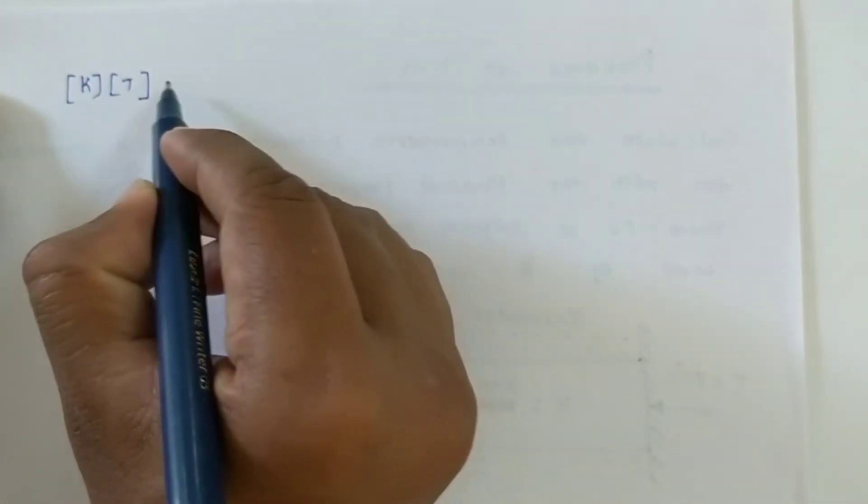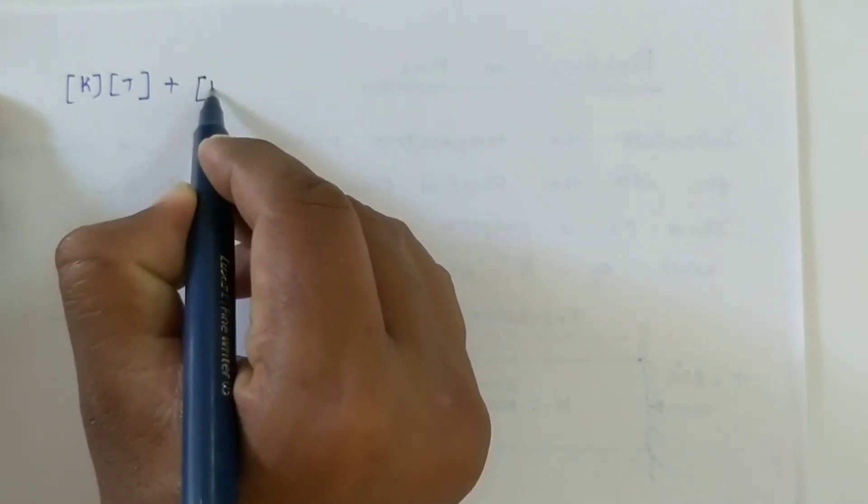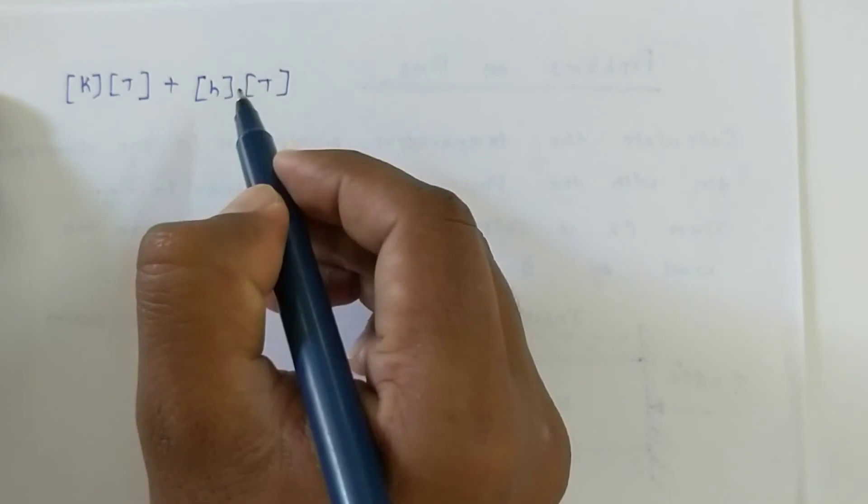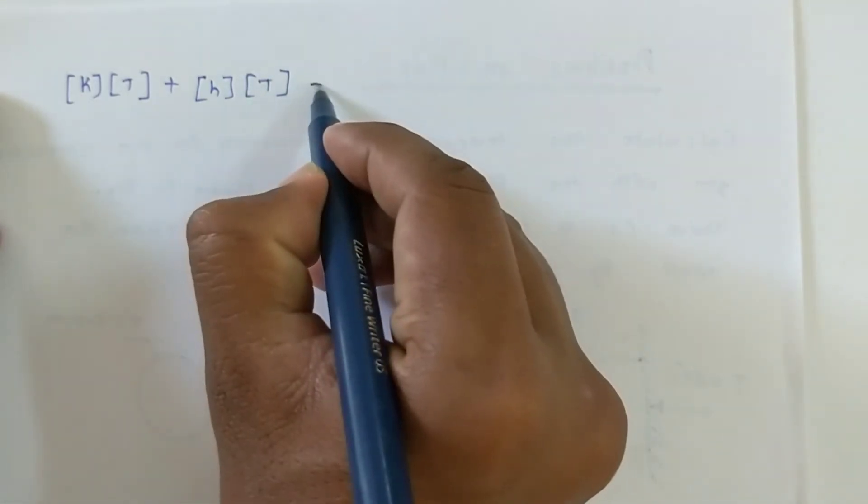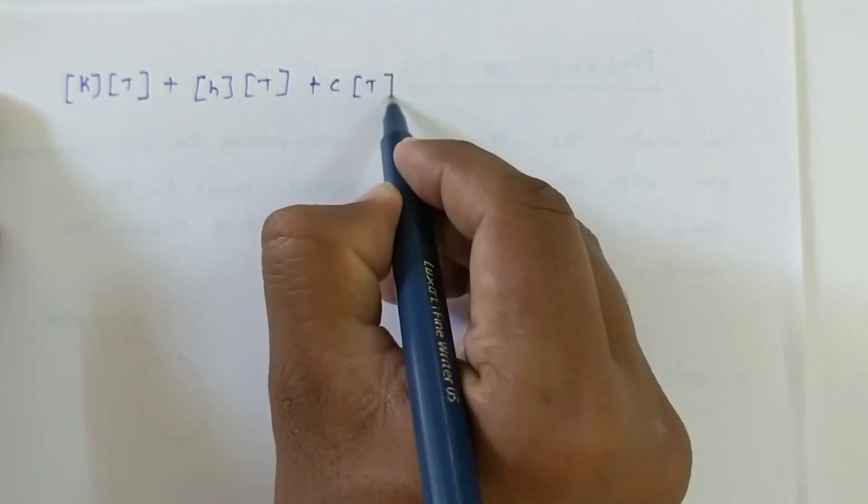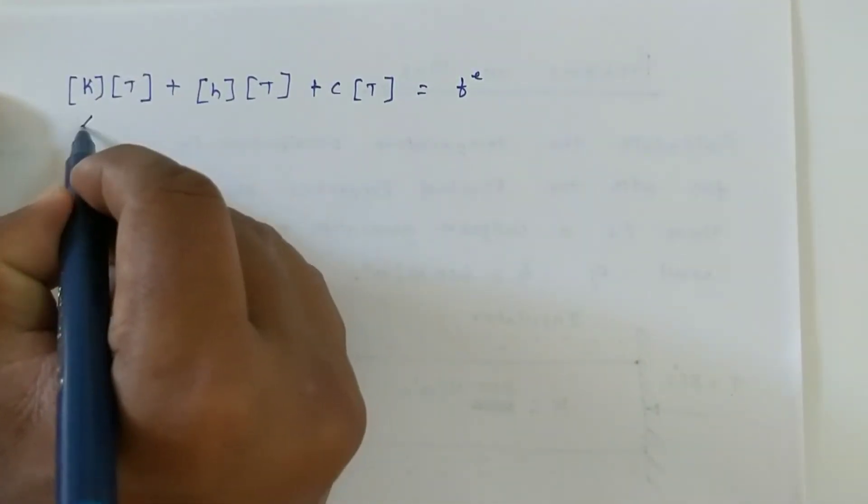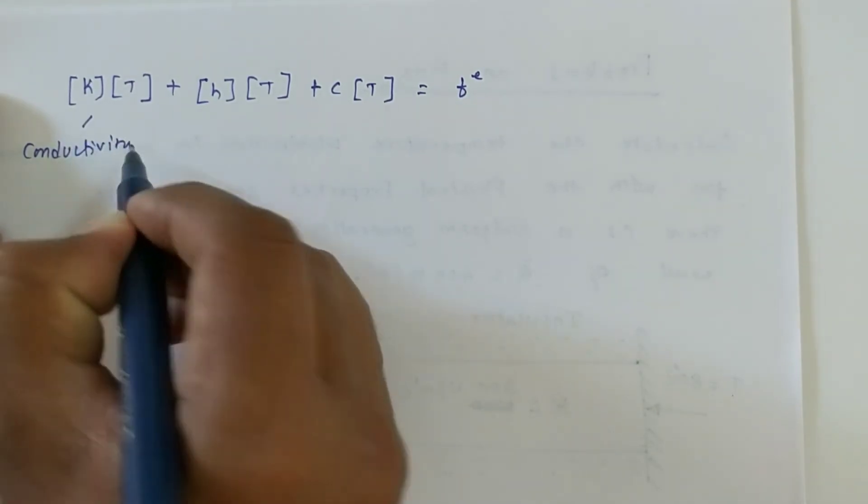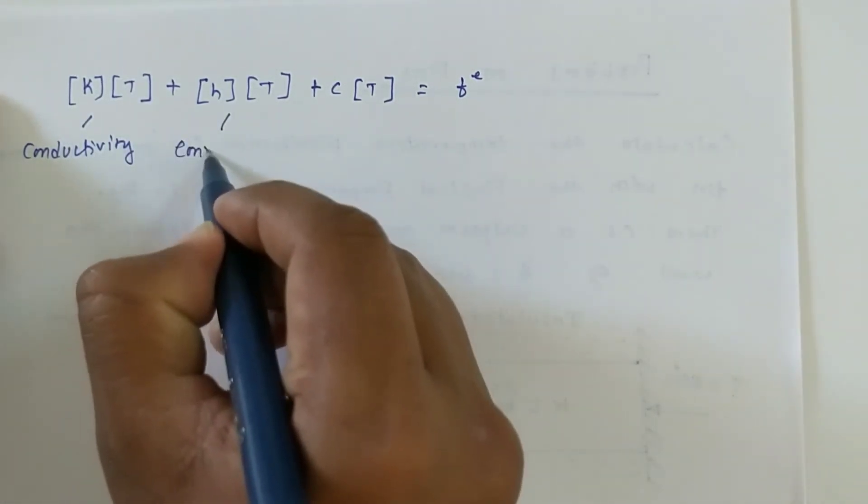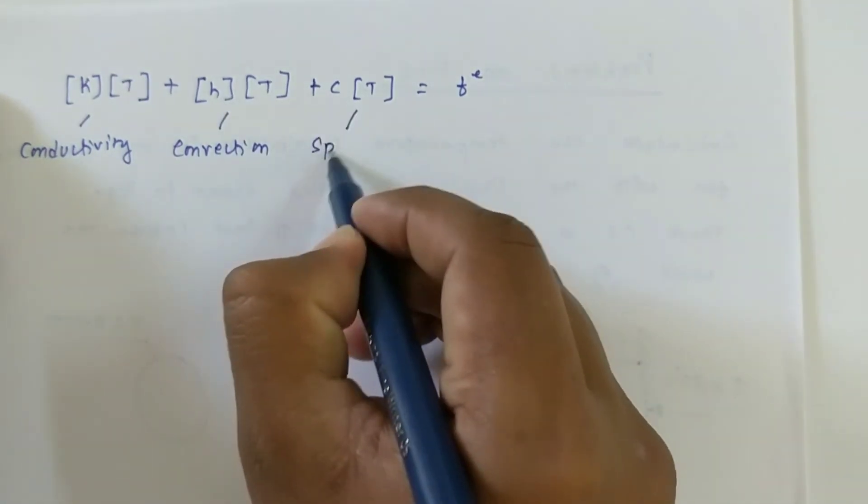Now we need to find out the nodal temperatures. We will write the general equation like this: K times T plus H times T plus C times T equals Fe. This is because of conductivity, this is for convection, and this is for specific heat matrix.